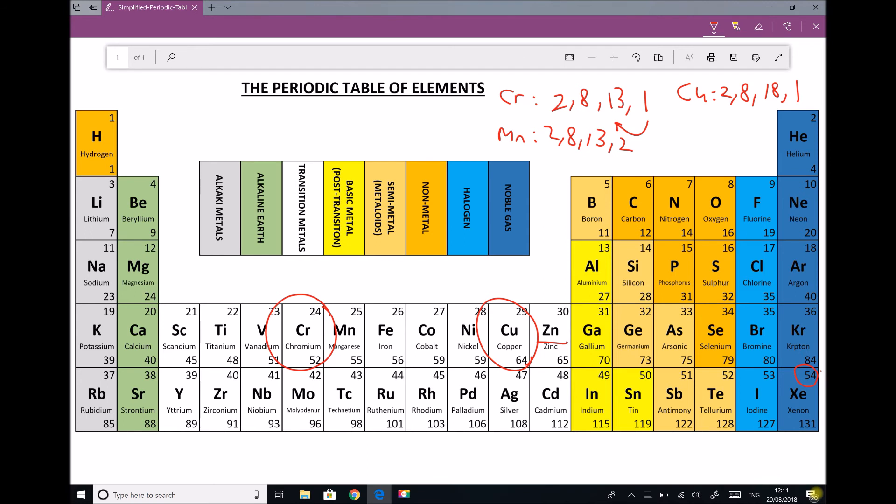So now that we have an understanding of electronic configurations, we can begin to look at the types of bonding that occurs in different engineering materials.